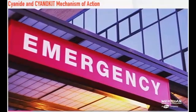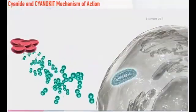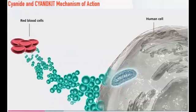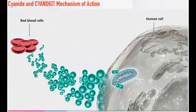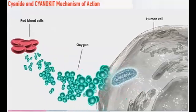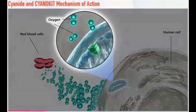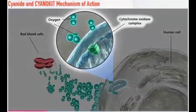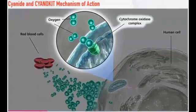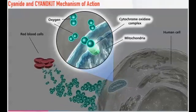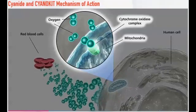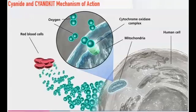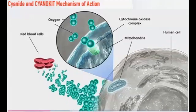Within the human body, in normal life-sustaining cellular respiration, red blood cells carry oxygen to the cells. Then, the oxygen accesses the cytochrome oxidase complex, which is located on the mitochondria inside cells. Mitochondria need oxygen to help create energy to support cellular function.